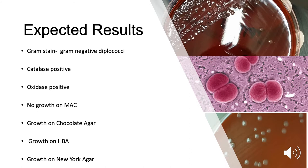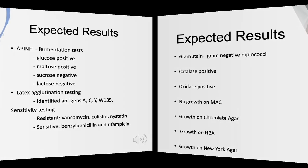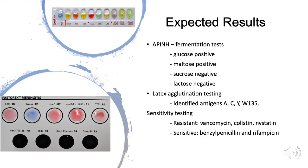Neisseria meningitidis grows without hemolysis. There is growth, but not as well as chocolate agar, because there are some inhibitory elements. Once heated, the inhibitory elements become inactive, thus Neisseria meningitidis grows better. The New York City agar was used because it specifically grows Neisseria species. There was growth; colonies were small, roughly 1–2 mm in size, and quite clear. Fermentation tests from the API-NH revealed glucose and maltose are positive, while sucrose and lactose are negative.